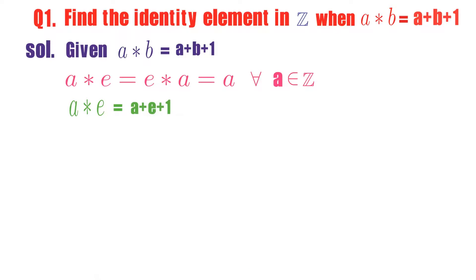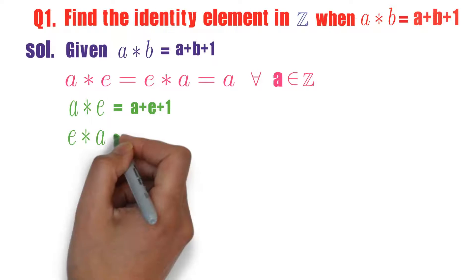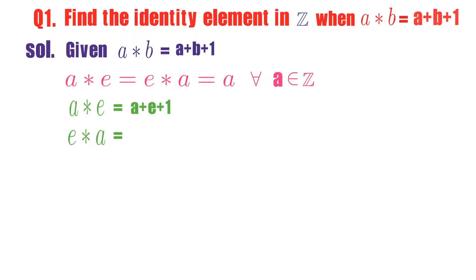What is a star e? a plus e plus 1. Now I will calculate e star a. What is e star a? e plus a plus 1. Observe that a star e is same as e star a.